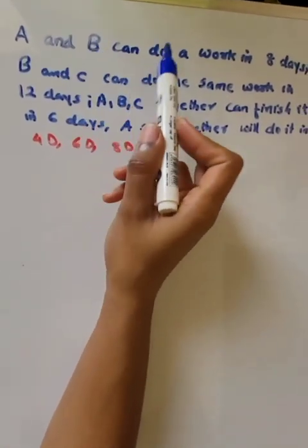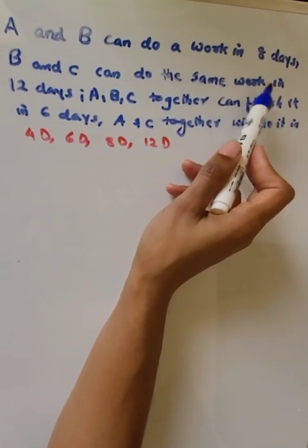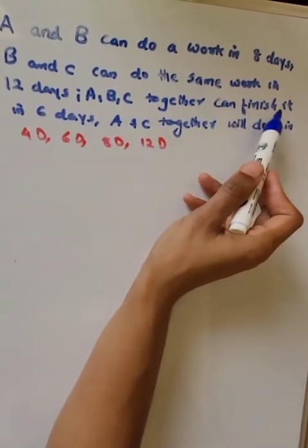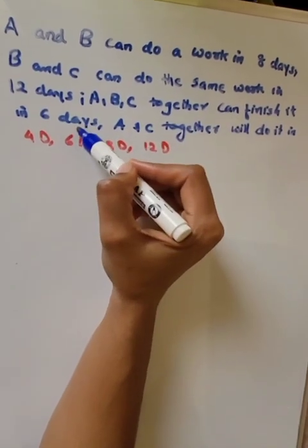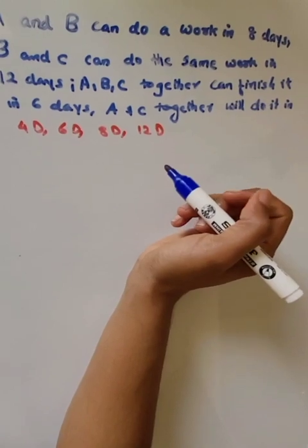Our question is: A and B can do a work in 8 days and B and C can do the same work in 12 days. A, B, and C together can finish it in 6 days. We have to find out how many days A and C together will take.